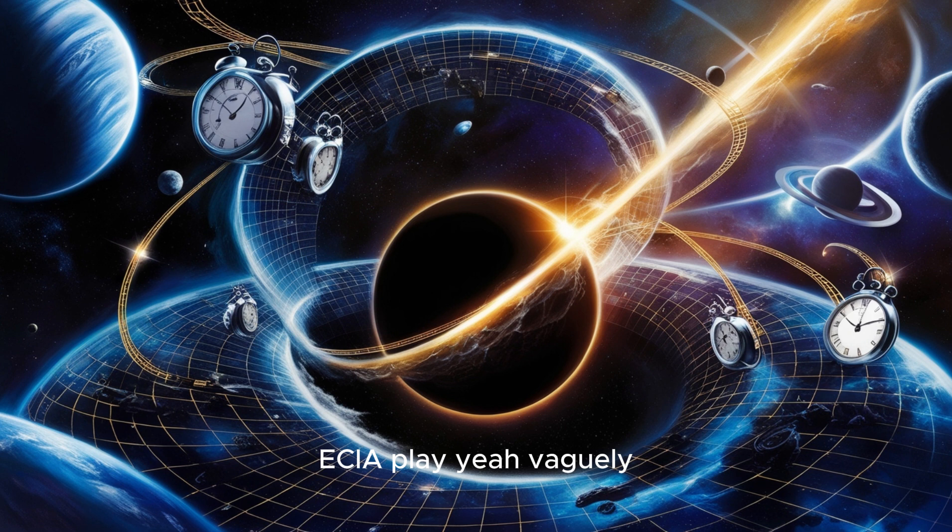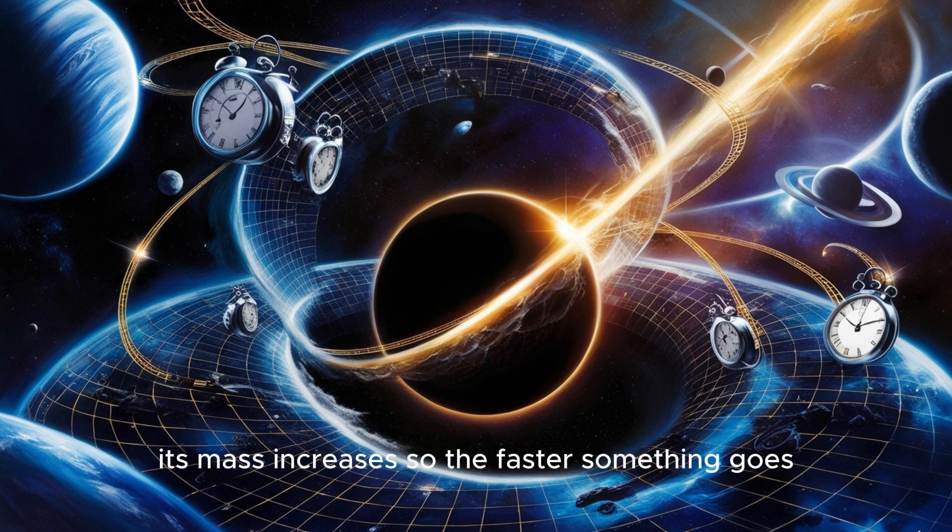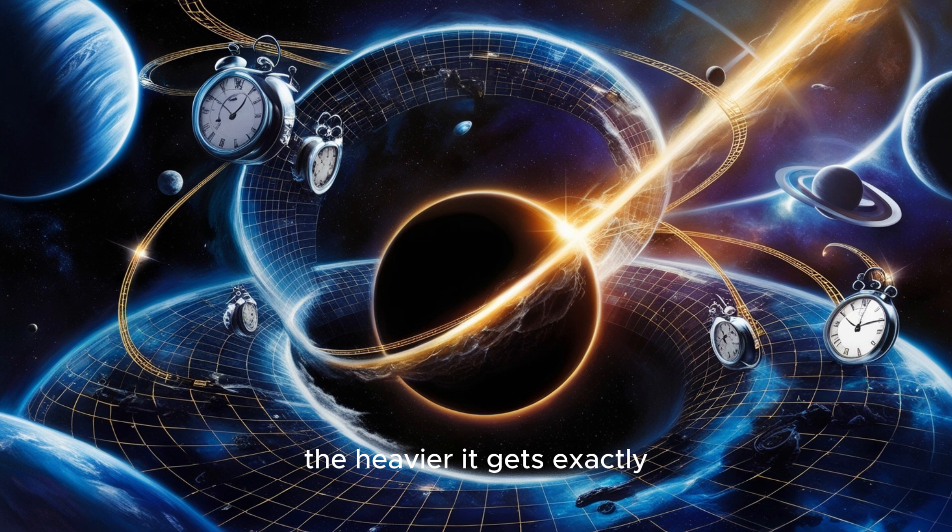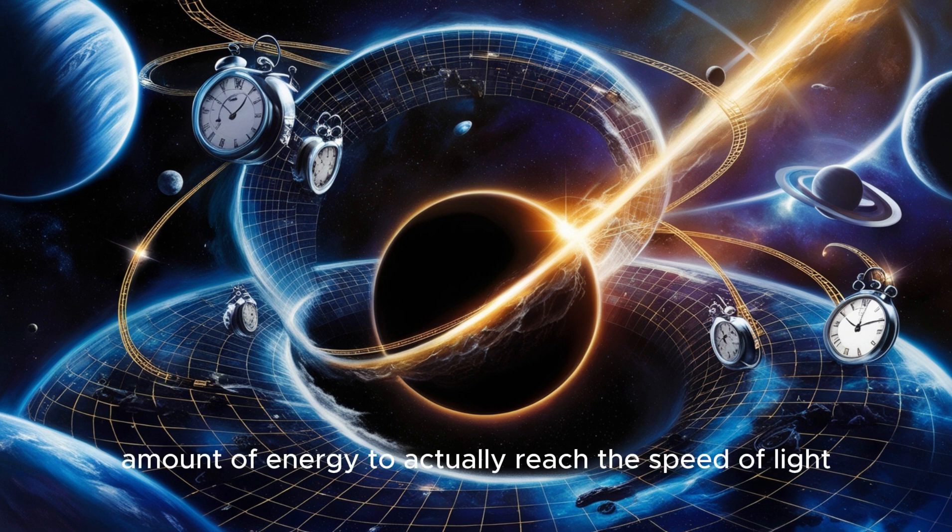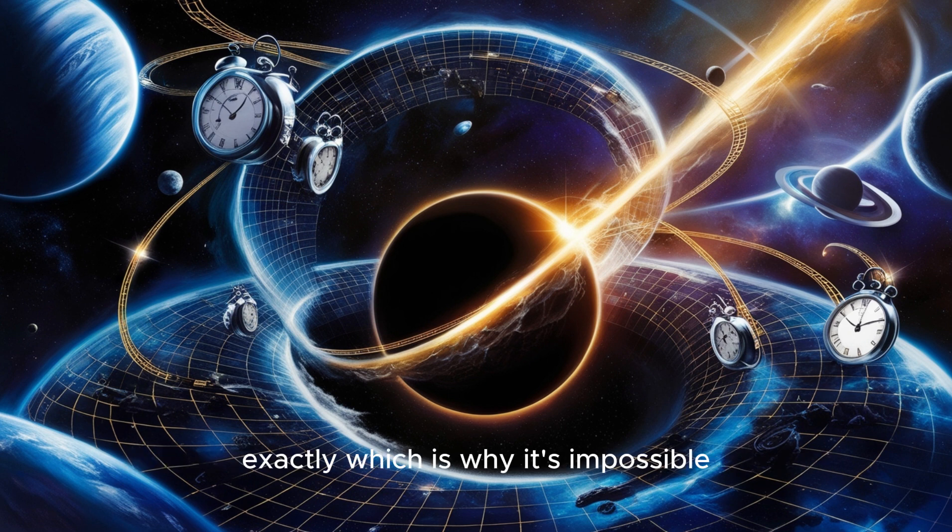Yeah, vaguely. Well, it tells us that energy and mass are like two sides of the same coin. They can be converted into each other. And as something speeds up, its mass increases. So the faster something goes, the heavier it gets. Exactly. And as an object gets closer and closer to the speed of light, its mass increases infinitely. So it would take an infinite amount of energy to actually reach the speed of light. Exactly, which is why it's impossible.